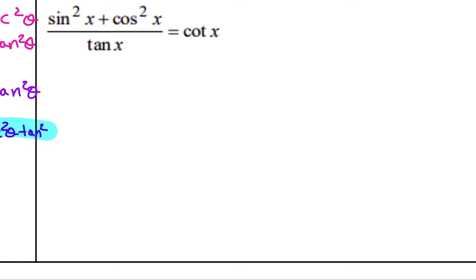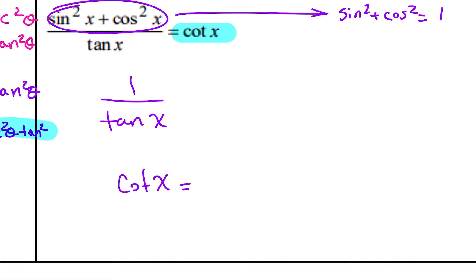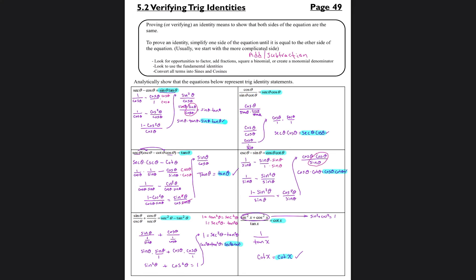Coming over here: sine squared of x plus cosine squared of x divided by tangent of x equals cotangent of x. Cotangent of x is definitely the simplest side, so we keep that and manipulate the left. Immediately you should recognize sine squared plus cosine squared always equals one. So I can rewrite this whole thing as 1 over tangent of x. And 1 over tangent is cotangent of x, which equals cotangent of x. Very easy.